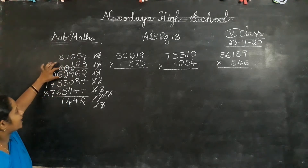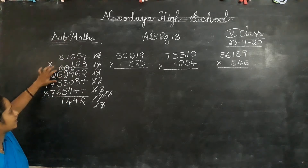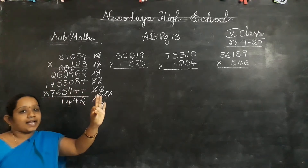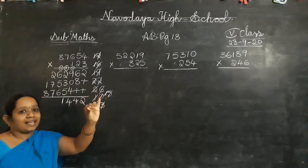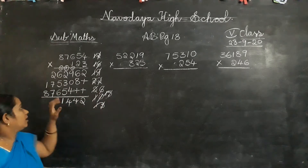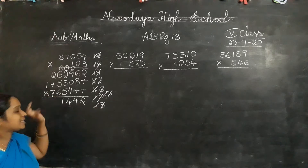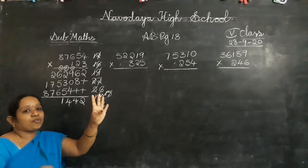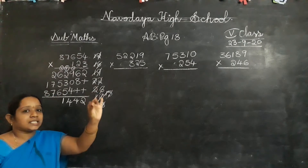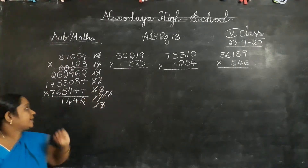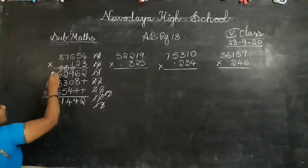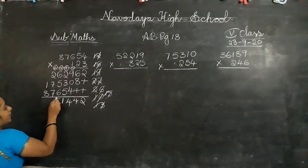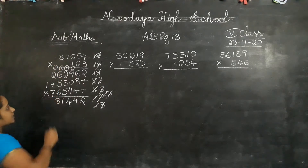Next. 6 plus 1 is 7. 7 plus 5? 12. 12 plus 6? 18. 1 is carry forward, 8 is in the answer place.